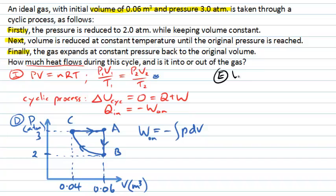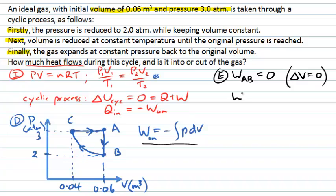In the evaluation step, we calculate work one step at a time. Starting with the work done going from state A to state B: it's the integral of P dV, the area under the curve. The line from A to B has no change in volume, so there is no area under it. Therefore the work from A to B is zero — there is never any work done if there is no change in volume.